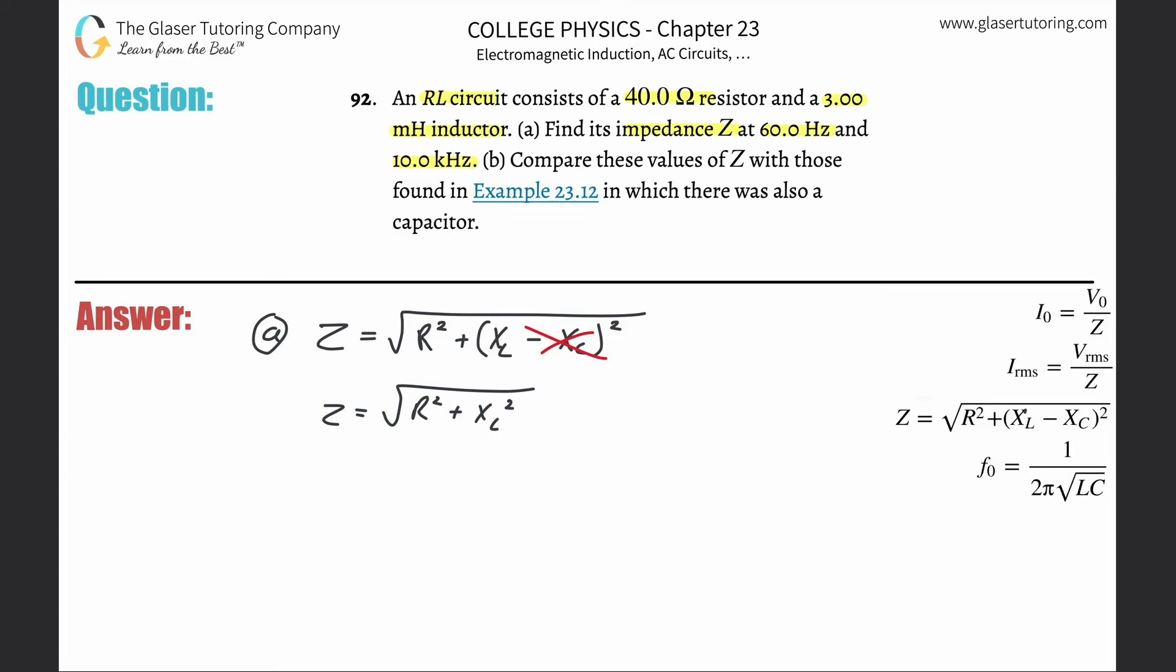So what I need: I got the resistance, they told it to us, it was 40 ohms. But the problem is they didn't tell us this reactive inductance, so we need a formula that talks about reactive inductance. We have a formula here that reactive inductance is going to be equal to 2π multiplied by the frequency of oscillation multiplied by the inductance.